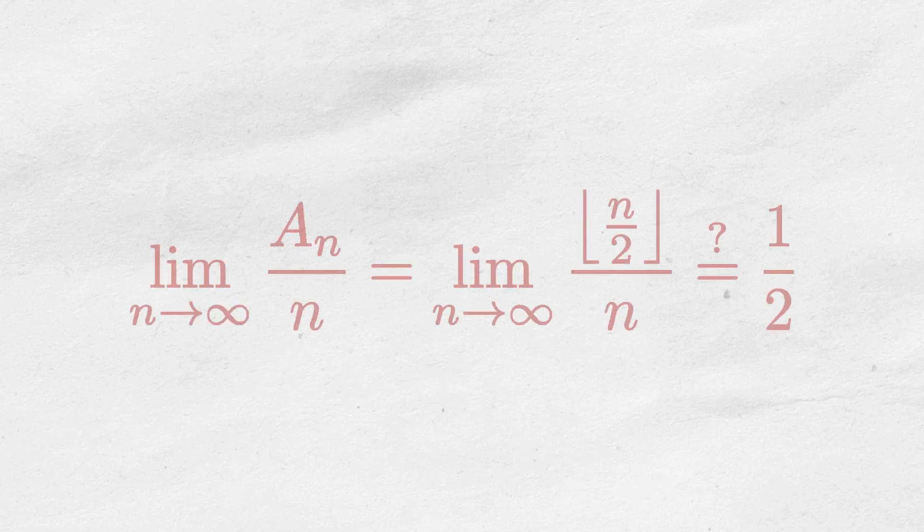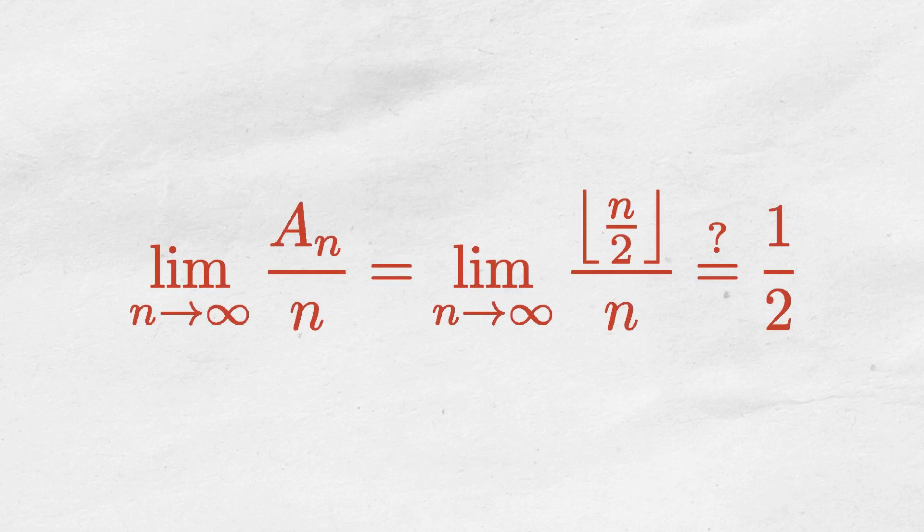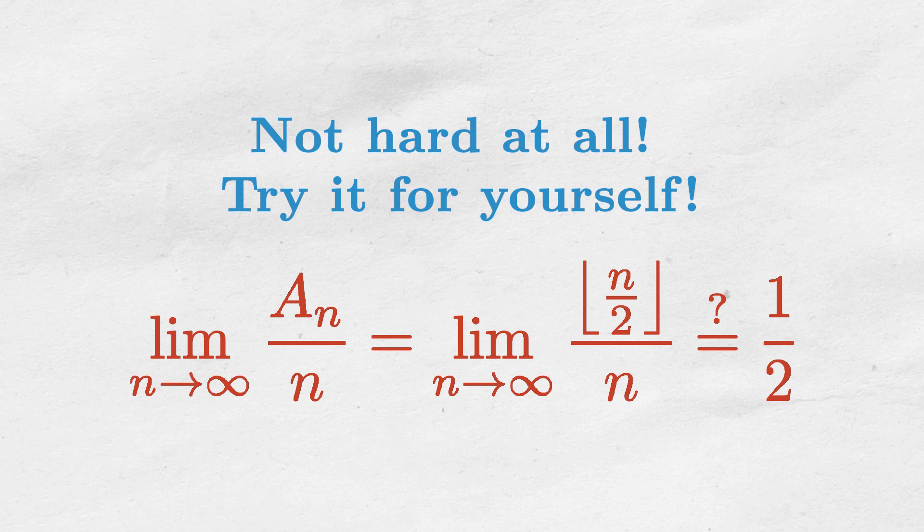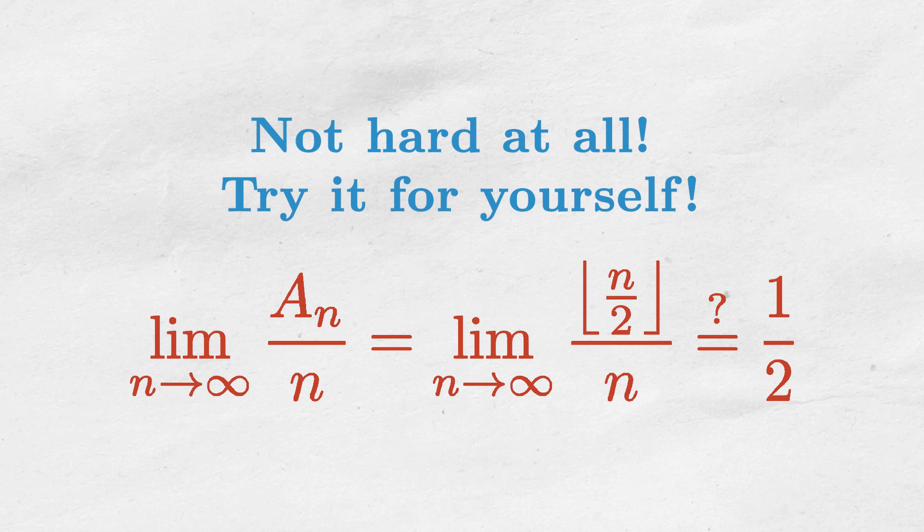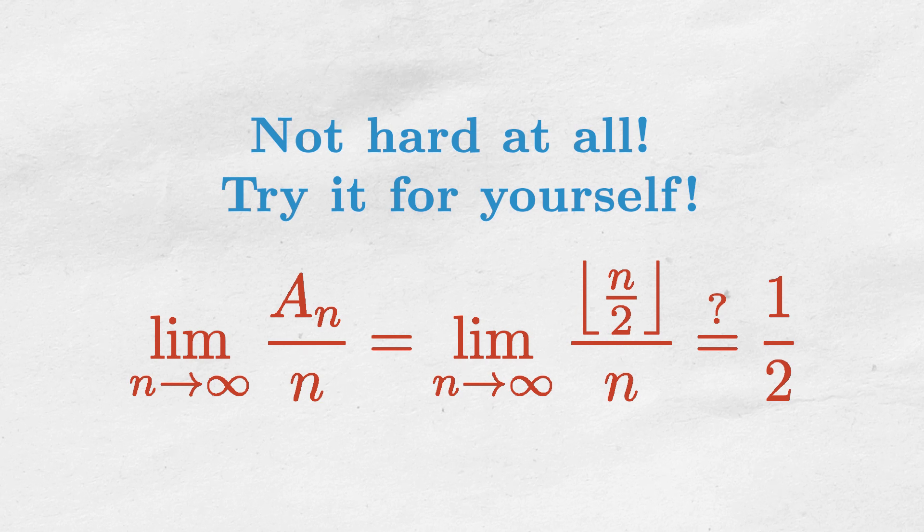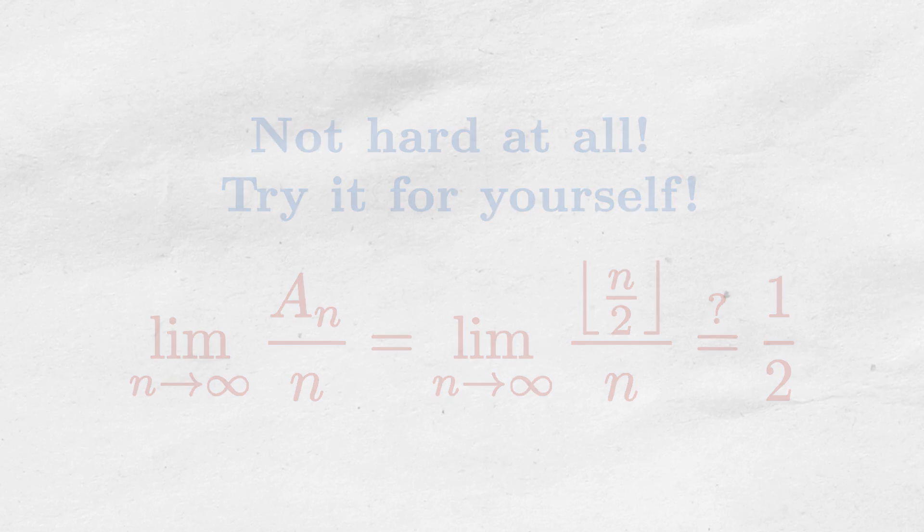Now to be precise, we need to prove that the asymptotic density of the set of even numbers is one half. This is not that hard though, it's a fairly straightforward exercise on limits. To make my life harder, I will prove it with the epsilon definition of limits. Enjoy!